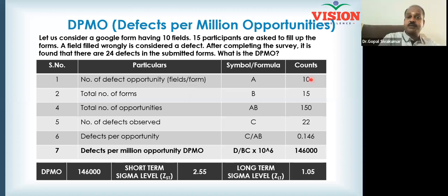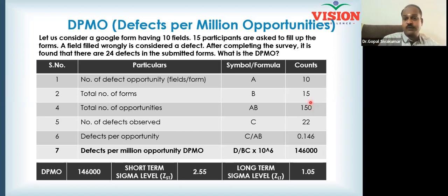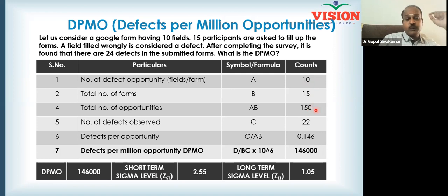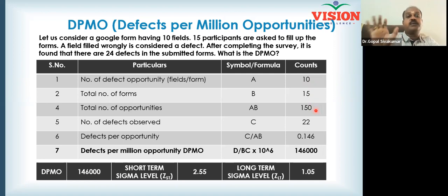There is a number of 15 defect opportunities. If we do it, we all have a systematic way to do it. There are a number of 150 defects in the process. If there is only 1 defect, then the process is perfect.